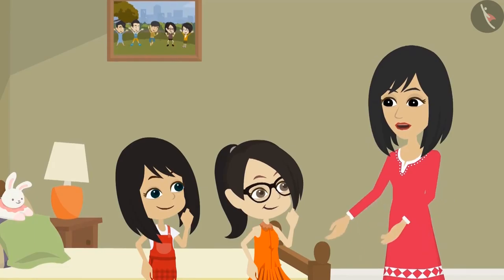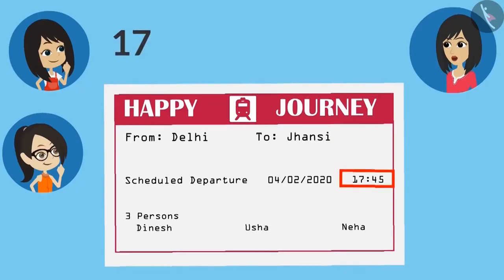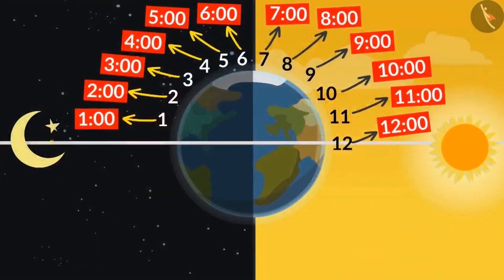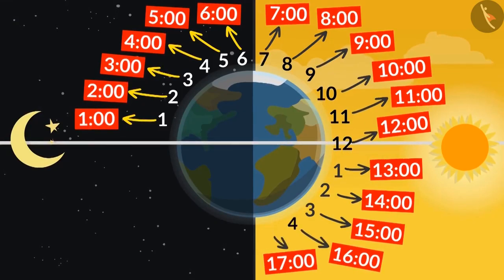Yes. And when I saw that our train is at 45 minutes past 17, I said that our train is at 45 minutes past 5 o'clock in the evening. Because you start reading after 12 — 13, 14, 15, 16, and 17 — that means 5 o'clock in the evening.